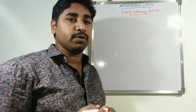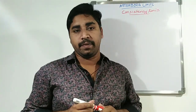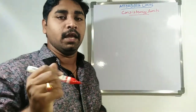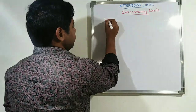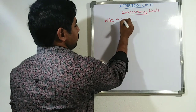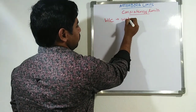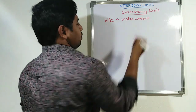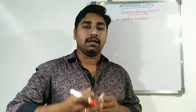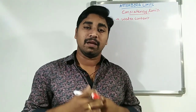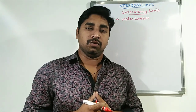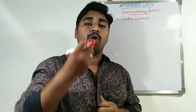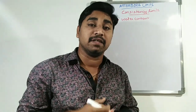Before going to Atterberg limits or consistency limits, the basic parameter one has to know is about water content. Water content is the amount of water available in the soil. Based on the amount of water available in the soil, there are many parameters which are dependent.